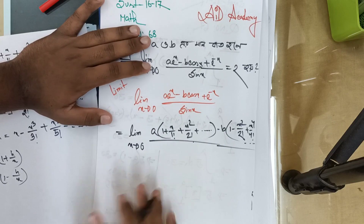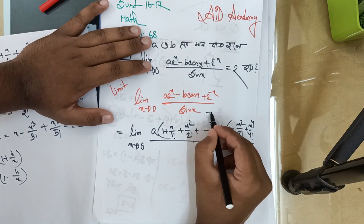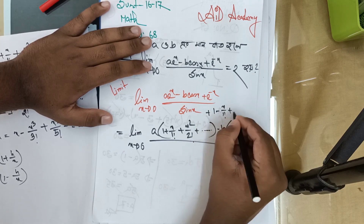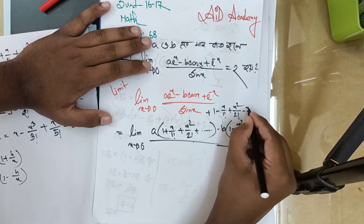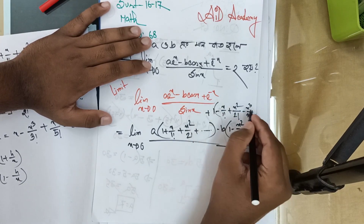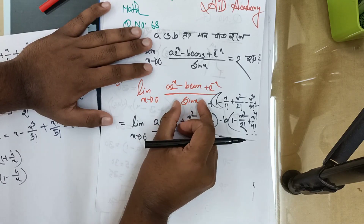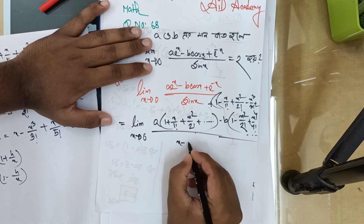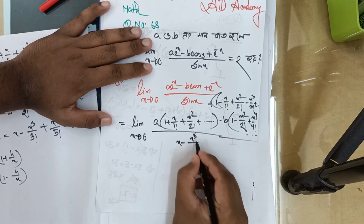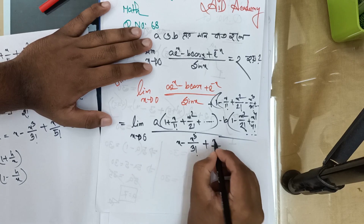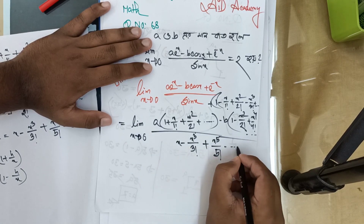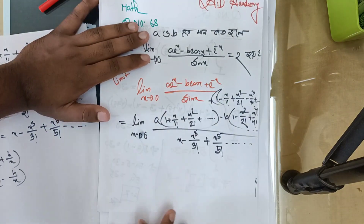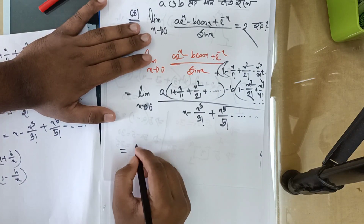We expand e^(−x) as: 1 minus x divided by 1 factorial plus x squared by 2 factorial minus x cube by 3 factorial, and so on. Now we have expanded all four parts: e^x, cos(x), e^(−x), and sin(x). We write the numerator divided by sin(x) using these series expansions.